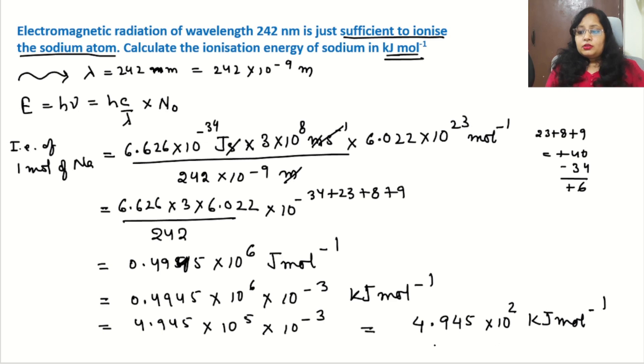So this is our final answer: the ionization energy of 1 mole of sodium is 4.945 into 10 to the power 2 kilojoule per mole. So friends, calculation is very easy. Don't forget to like, share, and subscribe the channel. Till then, thank you.